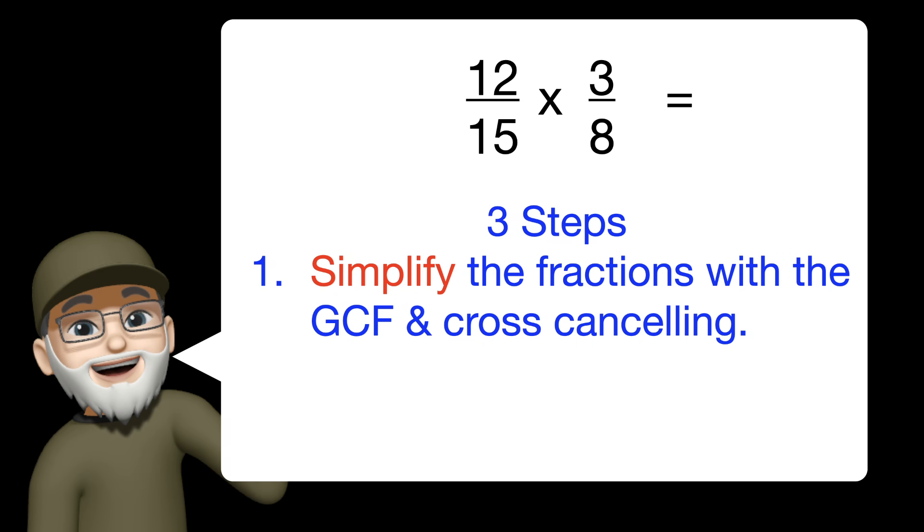So for these types of problems, there's three steps. First is that you want to simplify your fractions using the greatest common factor and cross-canceling. So you do the opposite numerator and denominator, simplify by dividing by the greatest common factor, and do that for the other set.